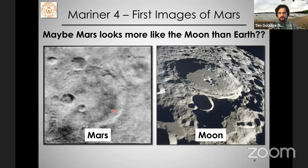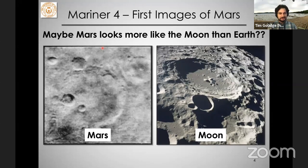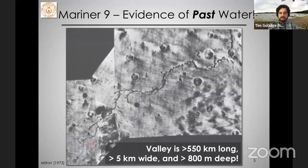It posed the question of whether Mars looks more like the Moon. This is a comparison of Mariner 4 images with images of the Moon, where the landscape is mostly dominated by impact craters, very distinct from the landscape on Earth where we have rivers, lakes, oceans, and seas. Much of our landscape is dominated by the influence of water and other fluids that move sediment around. Certainly disappointing if you were expecting canals as Lowell was.